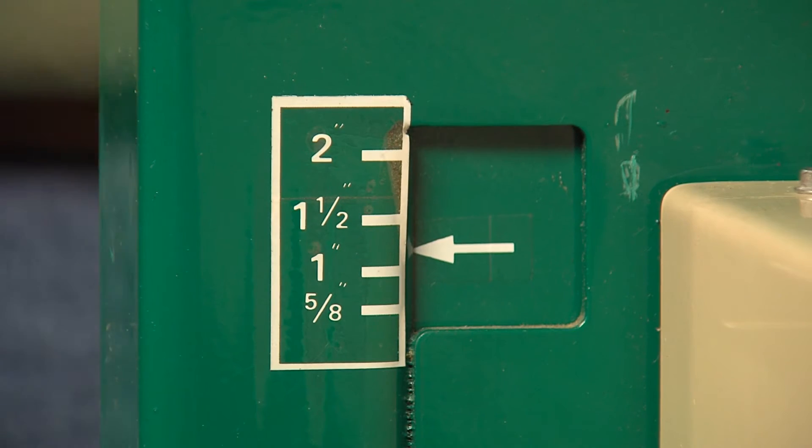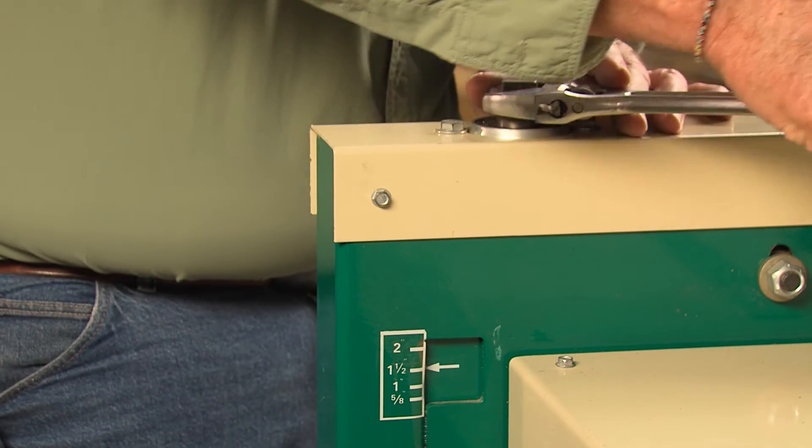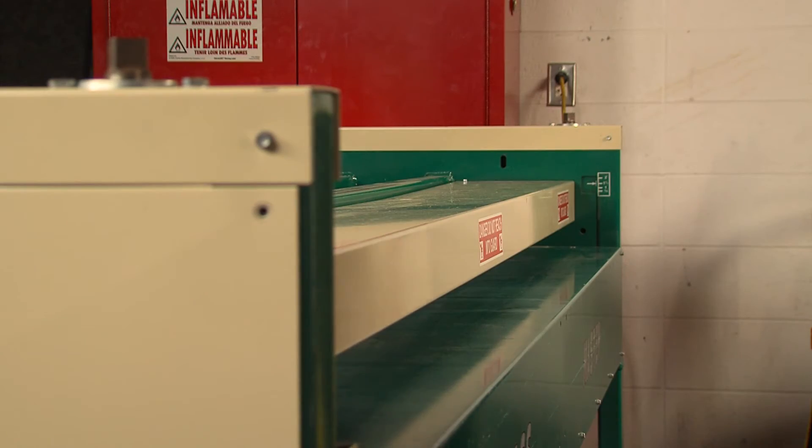Use the scale on the machine to determine the right height for the board thickness you are using. This is a one-to-one match, so you have to get your head down near the table to view and then adjust accordingly.